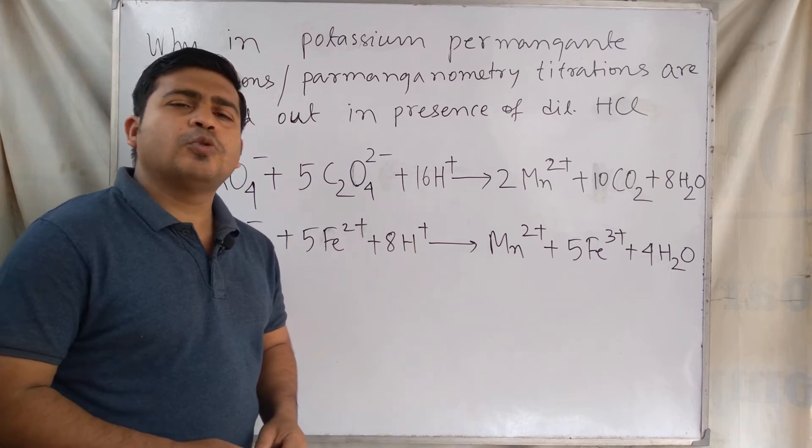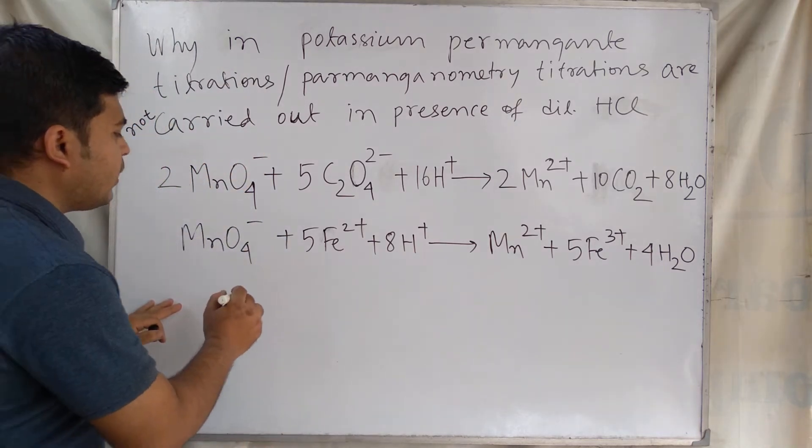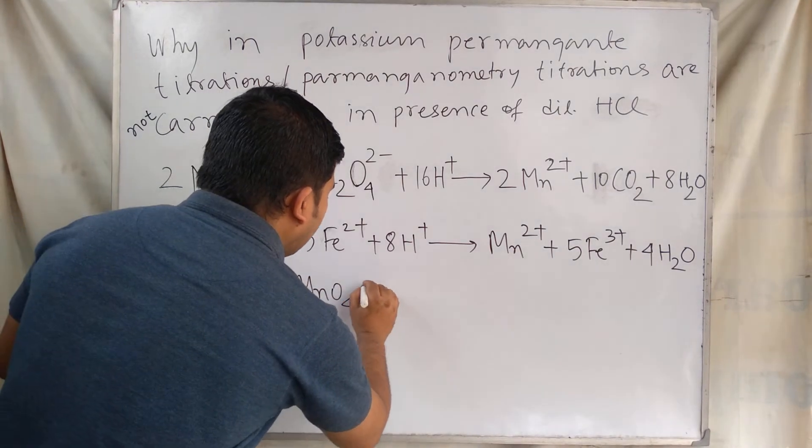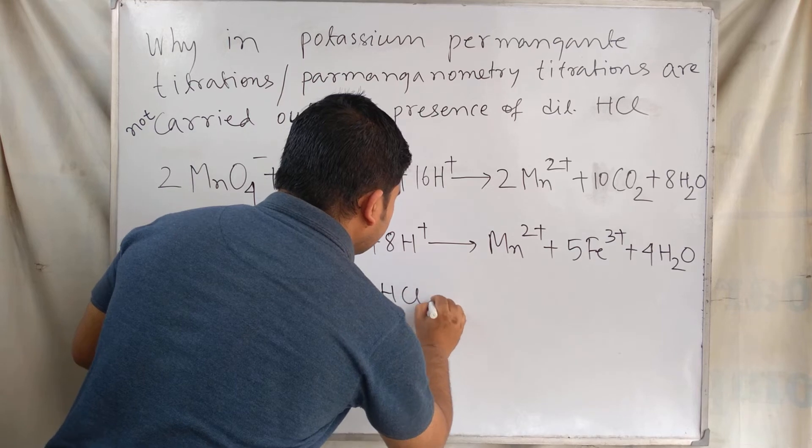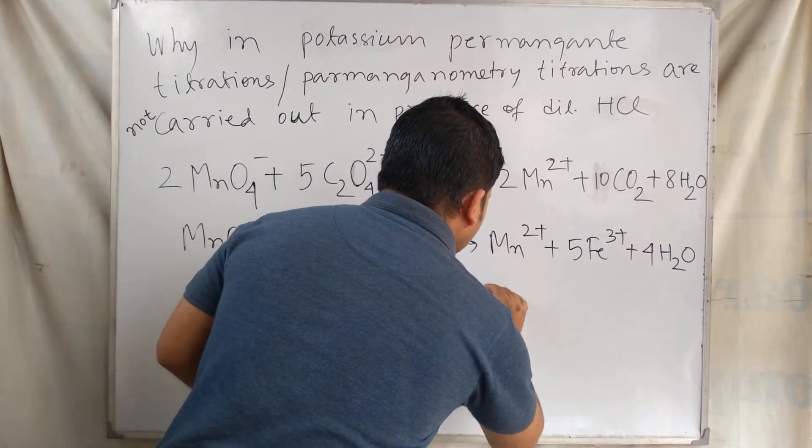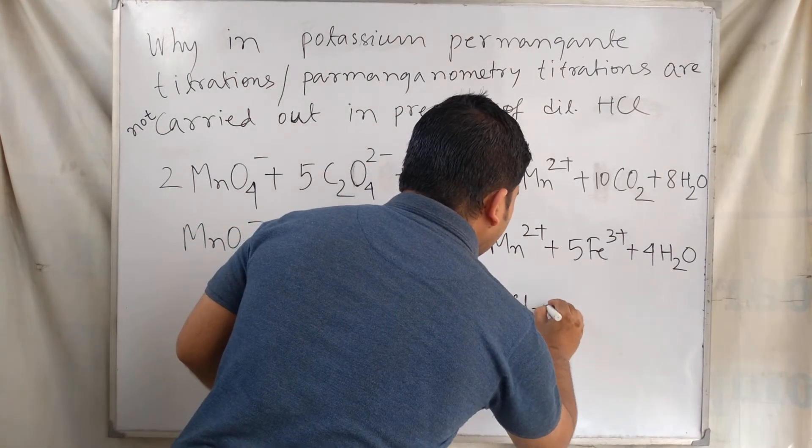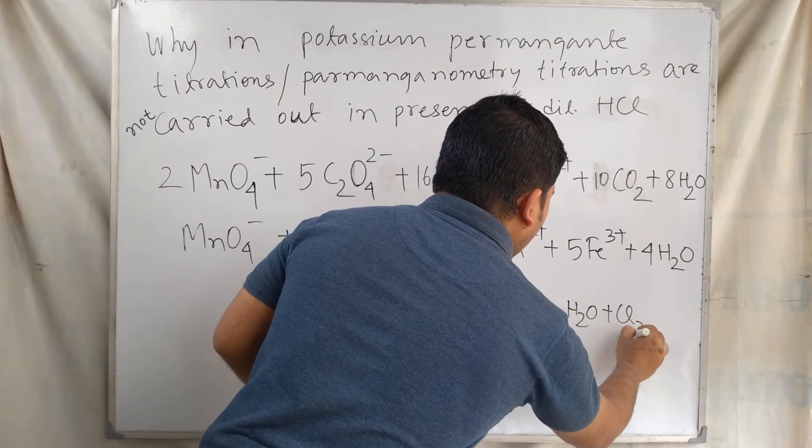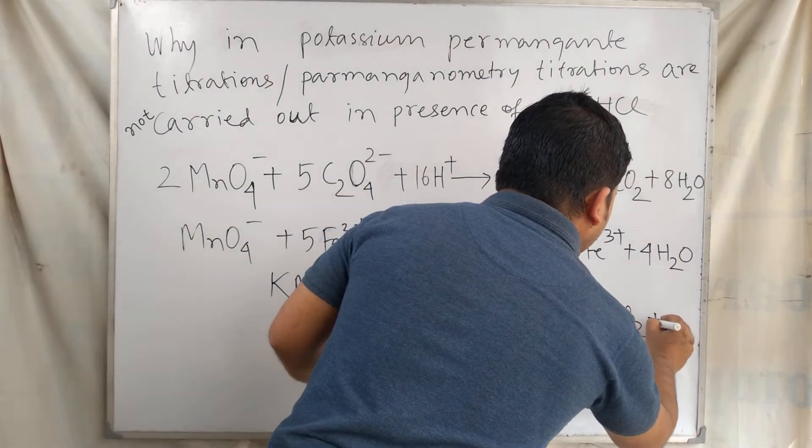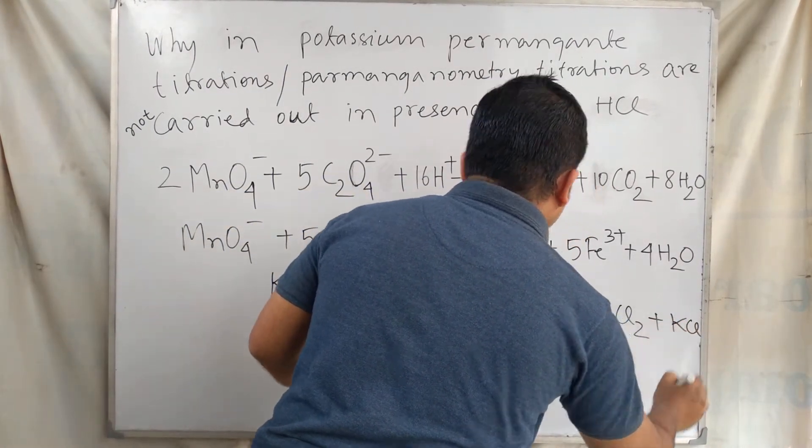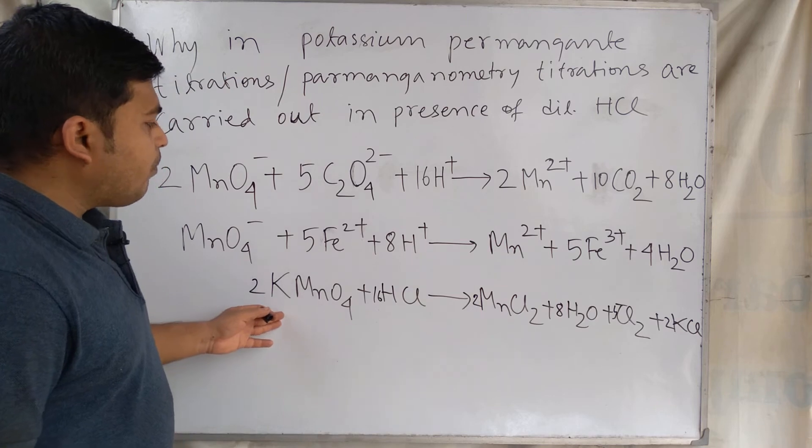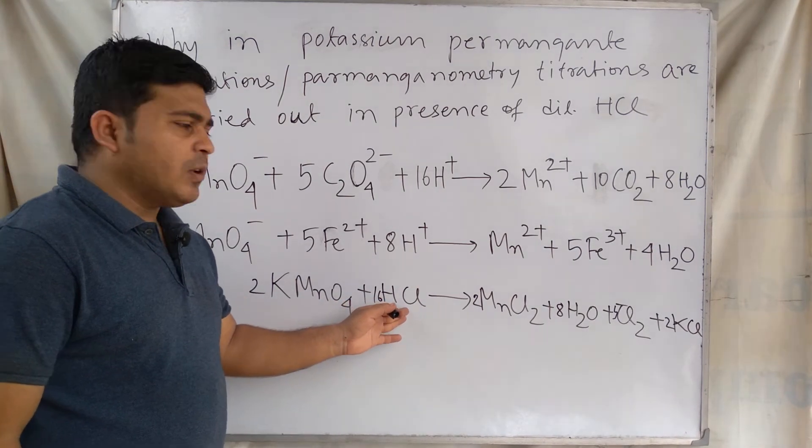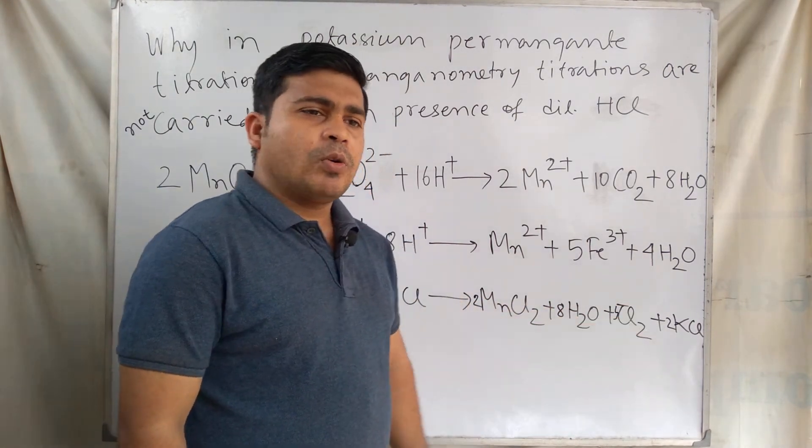If we write the equation, KMnO4 plus HCl produces MnCl2 plus potassium chloride. Potassium permanganate oxidizes the chloride ion of HCl to chlorine gas.